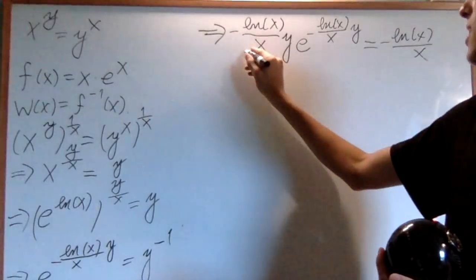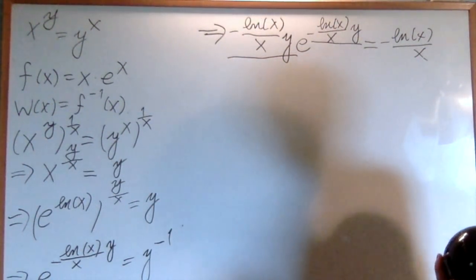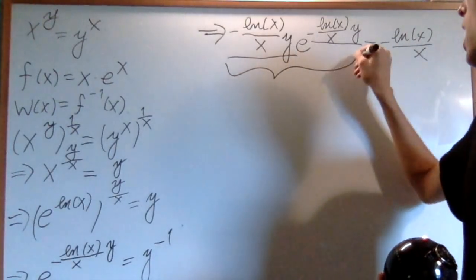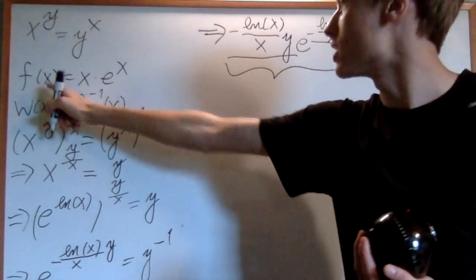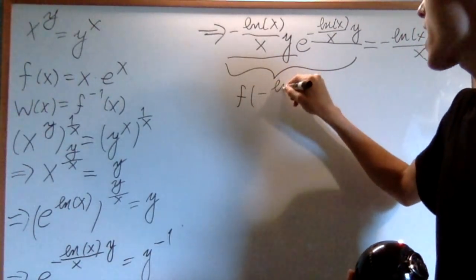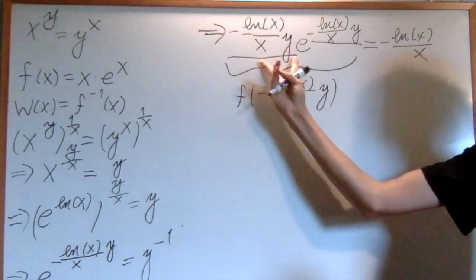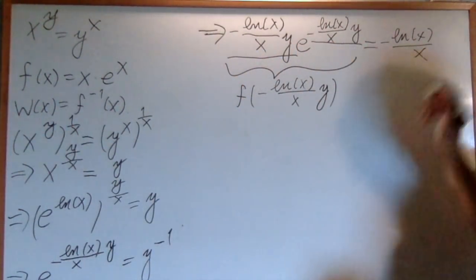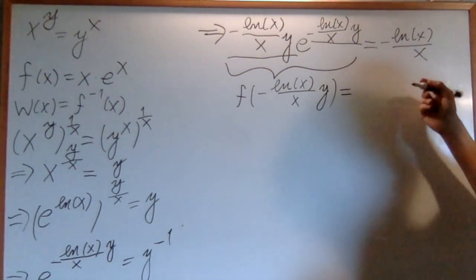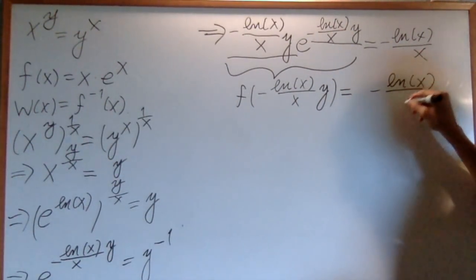Now, you can see that this right here is the same as this right here. So, I can write this using this function. This is just f of negative natural log of x over x, y. Because that's what's there, and that's what's there. And then on the right-hand side, I have negative natural log of x over x.